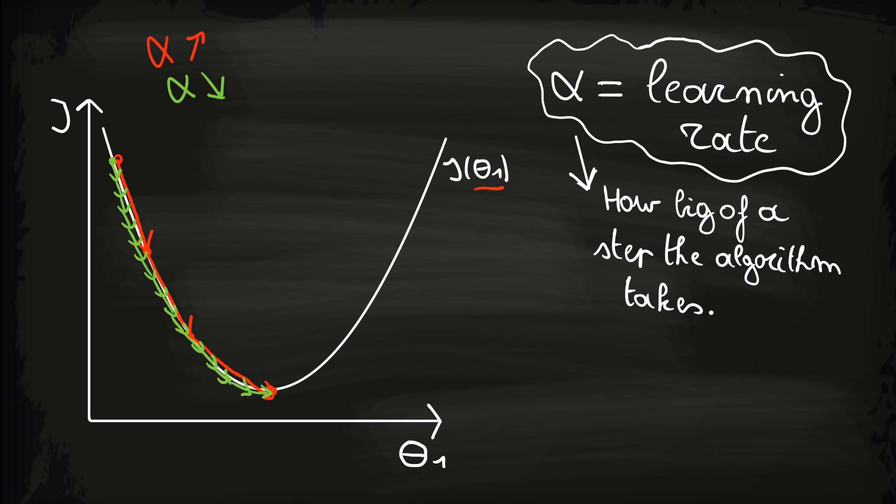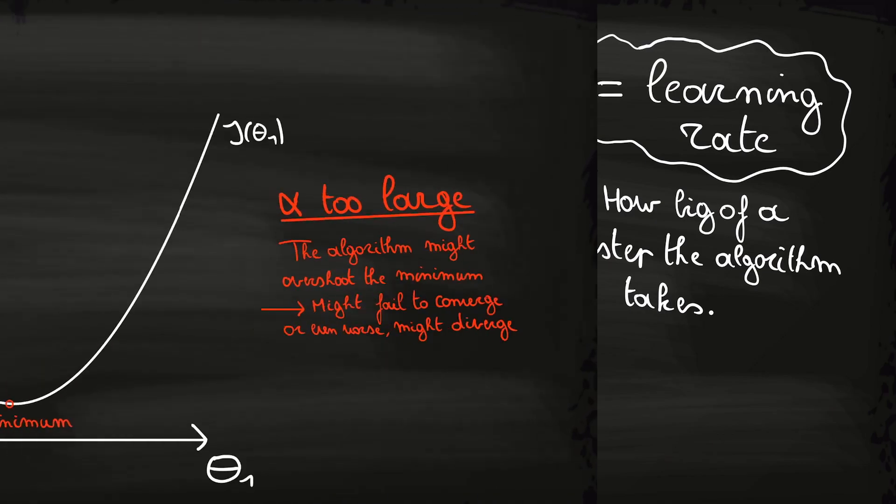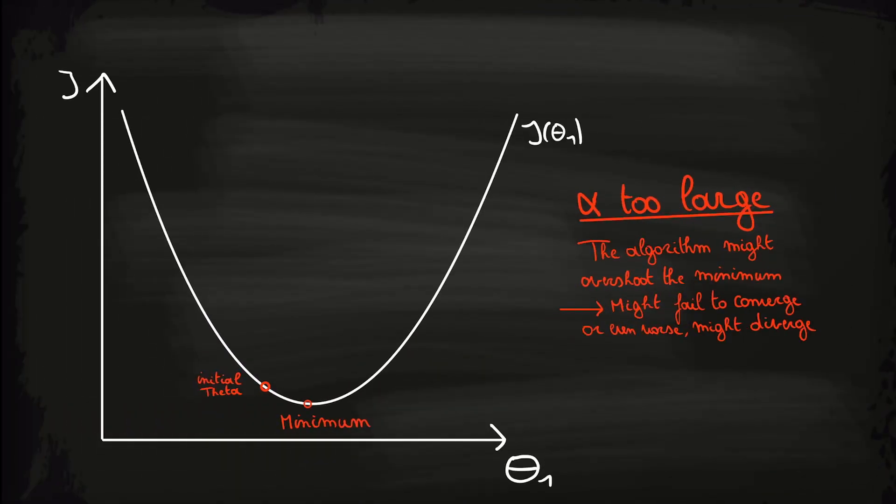Now you might think, why wouldn't we take a large value for alpha as this will be faster due to the fact that we need less iterations? Well, the problem lays in the fact that if you take alpha too large, the algorithm might overshoot the minimum. Meaning that it might fail to converge or worse, it might even diverge away from the minimum. Like I will now illustrate on this cost function.